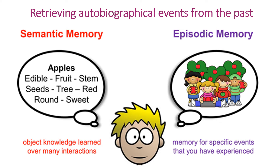When trying to retrieve or reconstruct an autobiographical memory, there's a combining of the semantic memory of personal facts with the episodic memory in terms of the sensory details, which might include thoughts, objects, people, and feelings. Someone with aphantasia is going to have difficulty with this because of their inability to use their mind's eye in order to help them reconstruct that memory from the past.